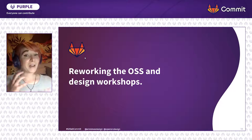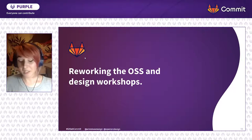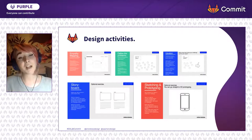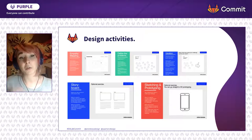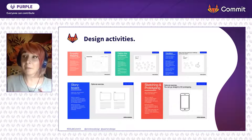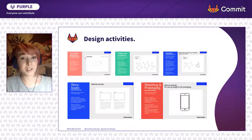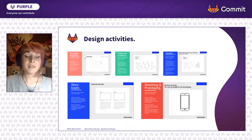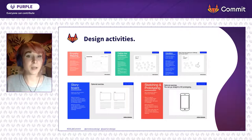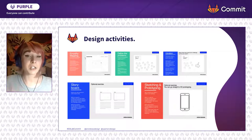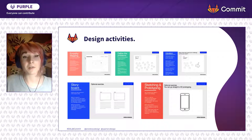After learning about these challenges and many other ones, we reworked the Open Design workshops from the initial ones. We included five key activities that we think are accessible ways to start doing design contributions to open source software: empathy mapping, defining the problems, ideation, storyboarding, and prototyping and sketching. These are really great things to include in your open source repositories for designers to work on, and they're also great ways for designers to explore your software and learn more about it from a design perspective.